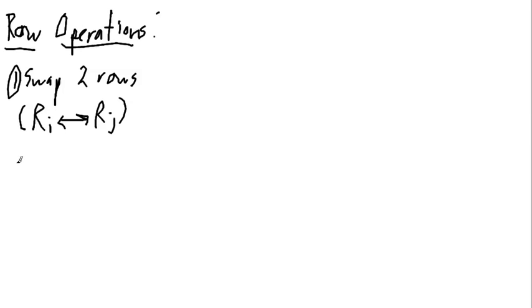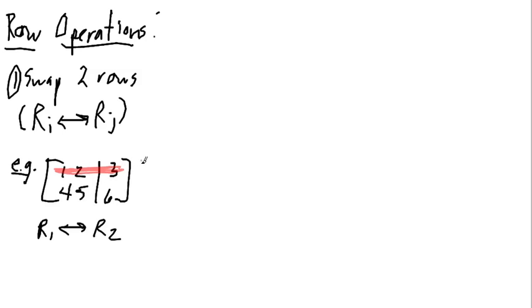So, for example, let me show you, let's suppose I have 1, 2, 3, 4, 5, 6. The row operation R1, left, right, R2. This row right here, let me just highlight this guy. This right here is row 1, R1. And this down here is R2. So, R1, left, right, R2 will give us 4, 5, and 6 on the top. And 1, 2, and 3 on the bottom. So, I've just swapped their order.